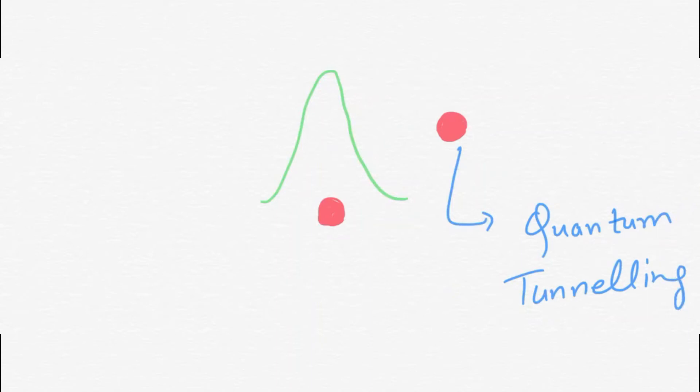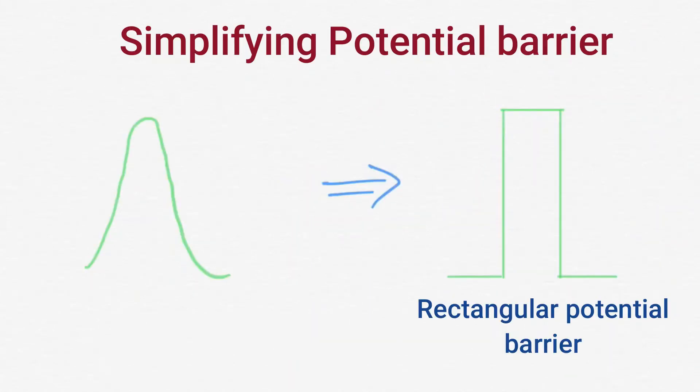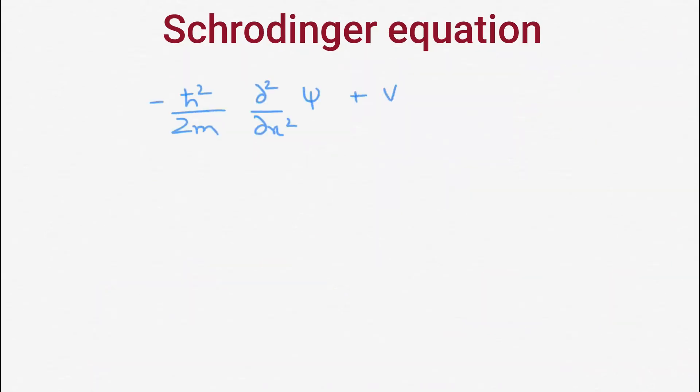Let's first simplify our potential barrier. Just for the sake of explanation, consider it of rectangular form. Now we will use Schrödinger equation to analyze the problem. We have two cases: energy greater than V0 and second, energy less than V0.